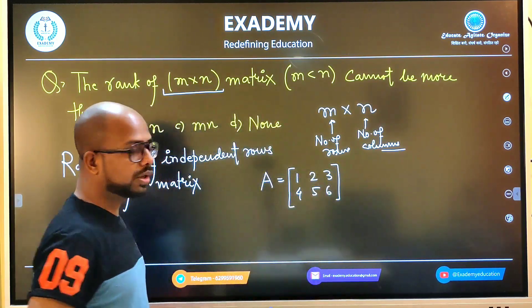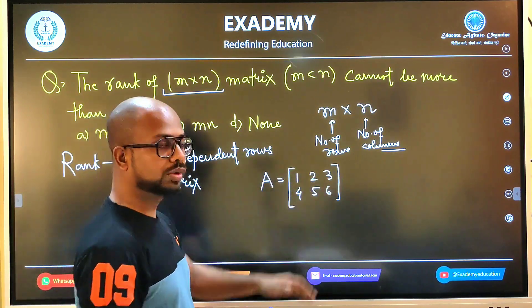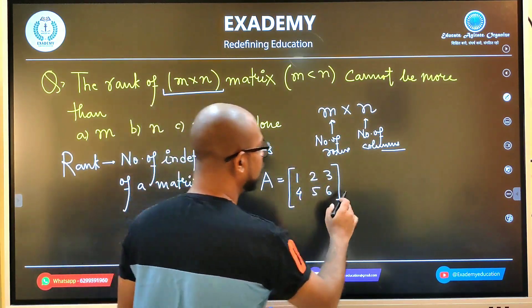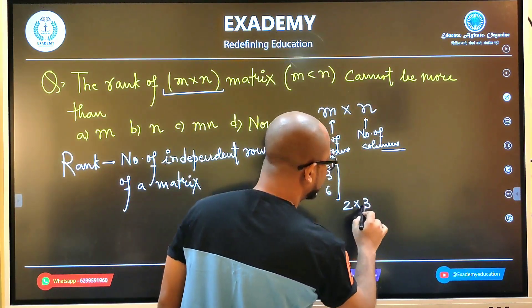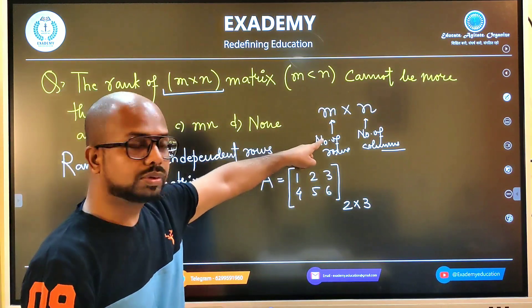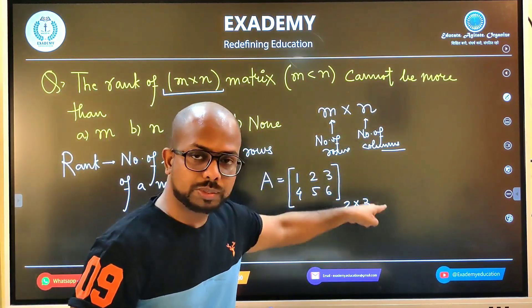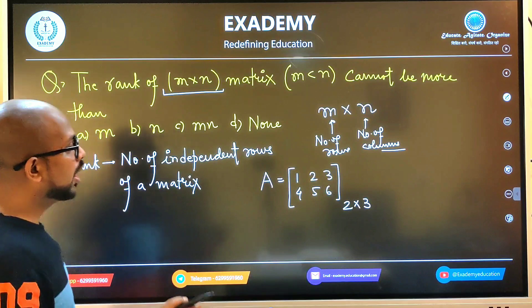What happens in this matrix? How many rows are there? Row 1, row 2. How many columns are there? 1, 2, 3. So this is a 2×3 matrix. Here we have 2 rows and 3 columns.